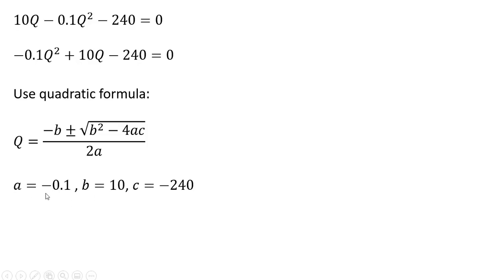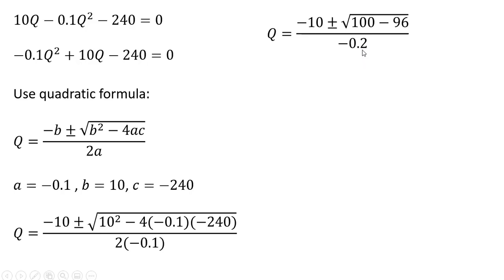And A is -0.1, B is 10, and C is -240. Plugging everything into that formula, and now simplifying. 10² is 100, and then we've got minus 96 over here. Taking square root of 4, we have the following.